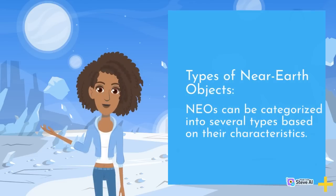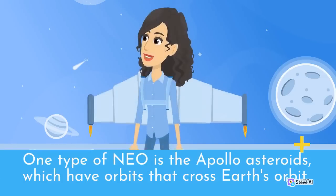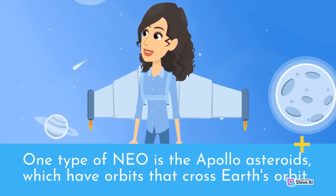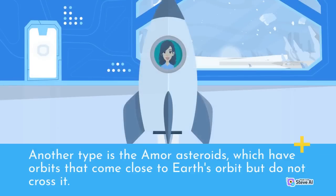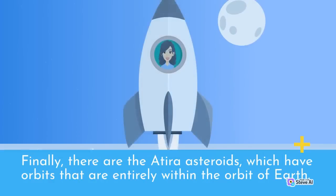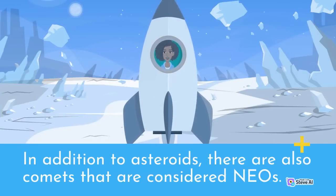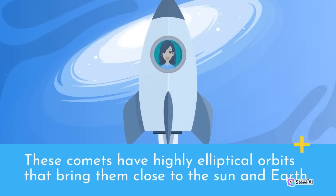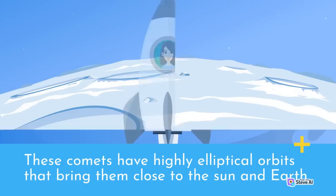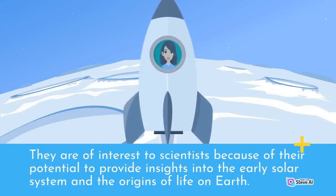Types of Near-Earth Objects: NEOs can be categorized into several types based on their characteristics. One type is Apollo asteroids, which have orbits that cross Earth's orbit. Another type is Amor asteroids, which have orbits that come close to Earth's orbit but do not cross it. Finally, there are Atira asteroids, which have orbits entirely within the orbit of Earth. In addition to asteroids, there are also comets considered NEOs, with highly elliptical orbits that bring them close to the Sun and Earth. These comets may provide insights into the early solar system and the origins of life on Earth.